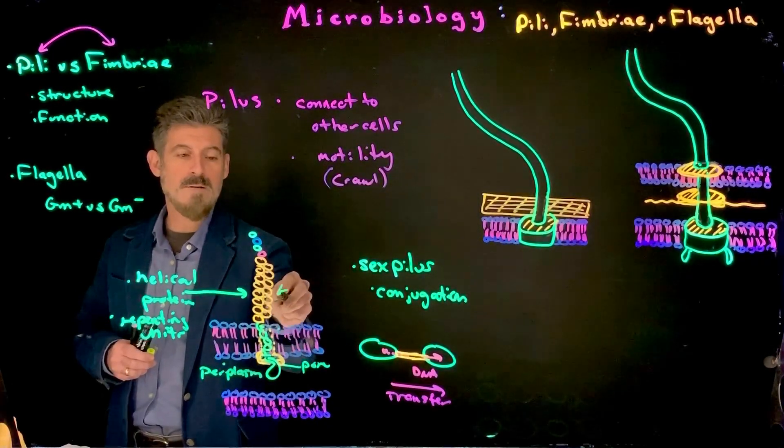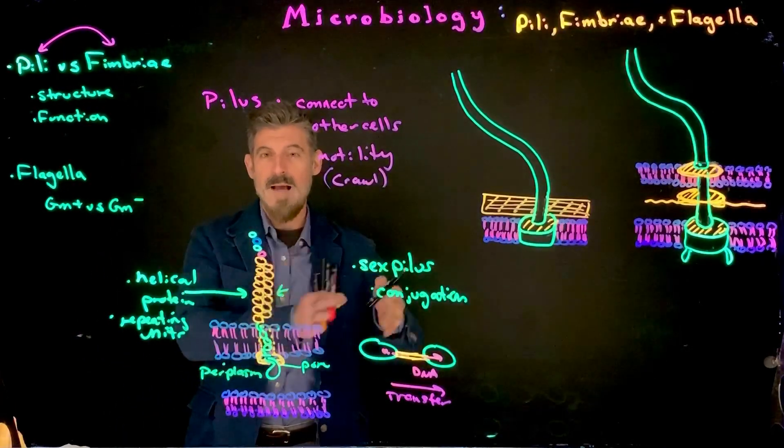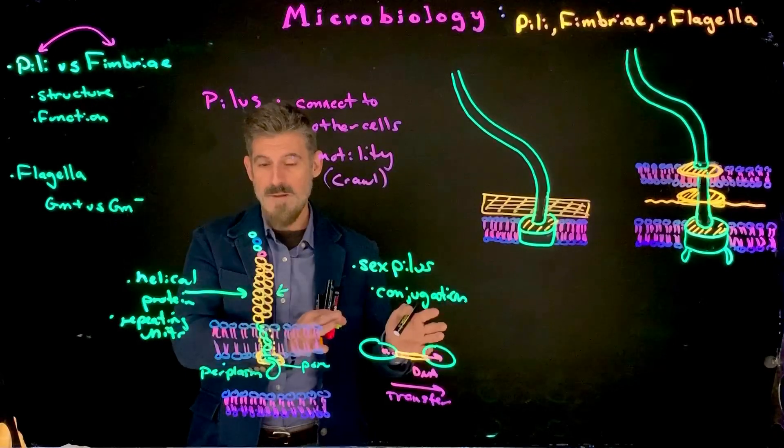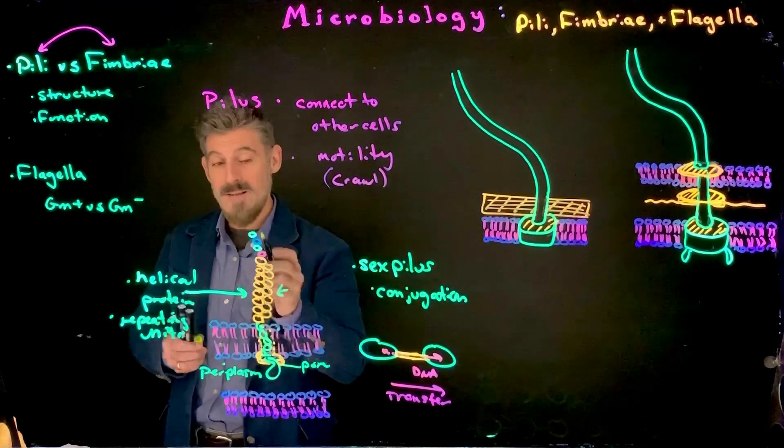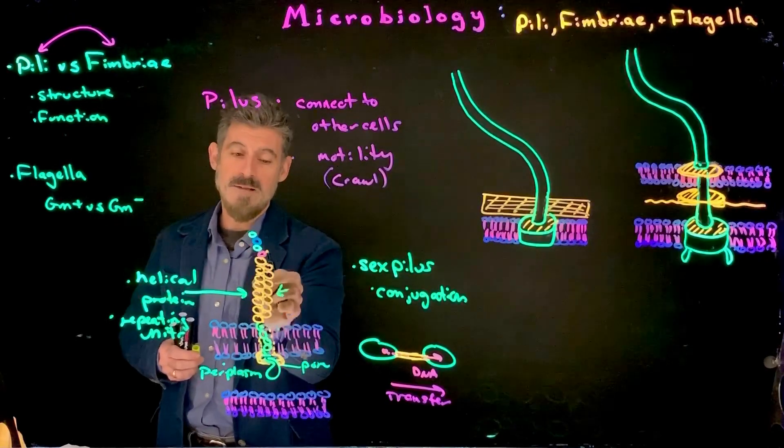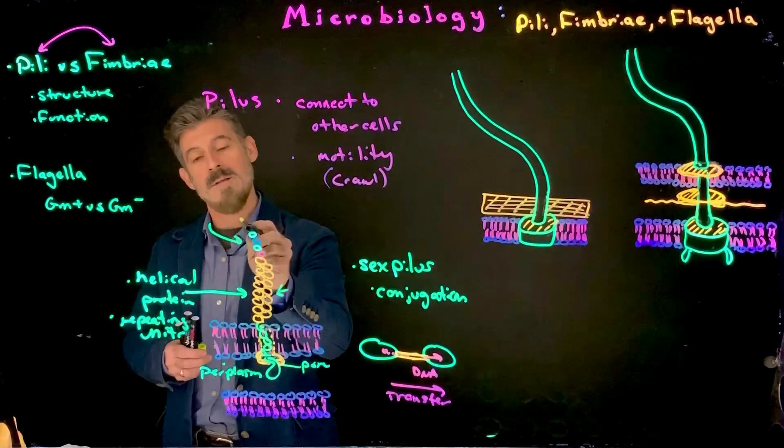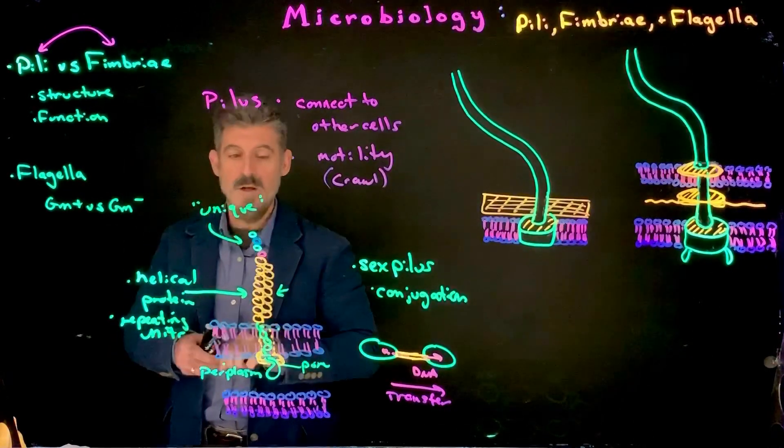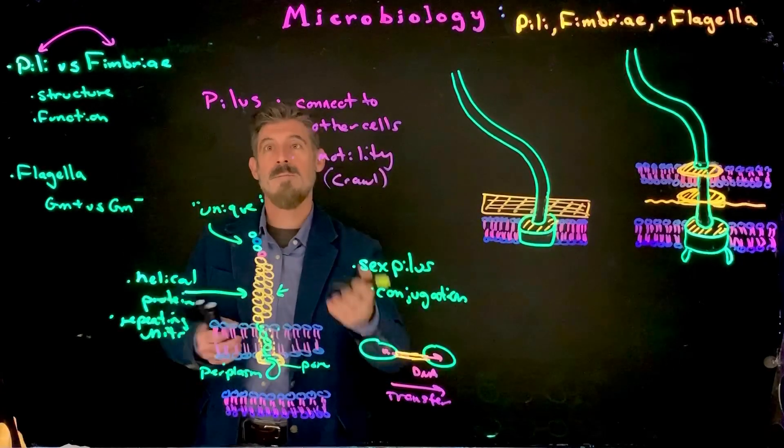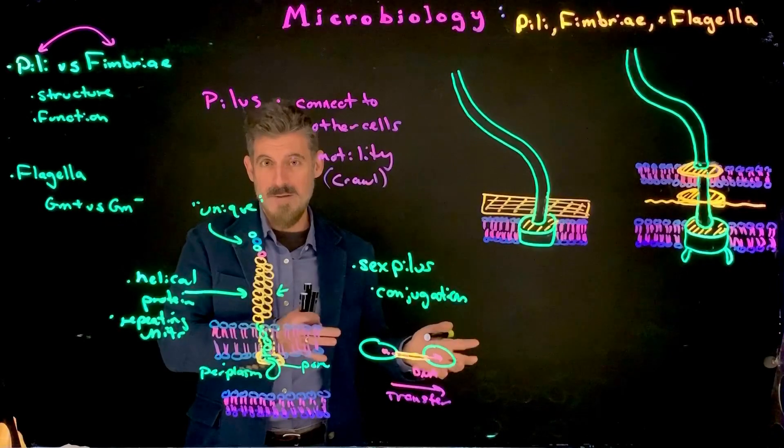And so these units can be different for different types of pilus. So there are different types of pilus or classes of pilus. And one of the things that makes them different is what this particular protein is. But in addition to that, even if you have the exact same protein constructing the pilus, these proteins out here at the tip can often be unique. They're almost always going to be unique. And they're going to then, again, be unique for what the particular cell is going to attach to.